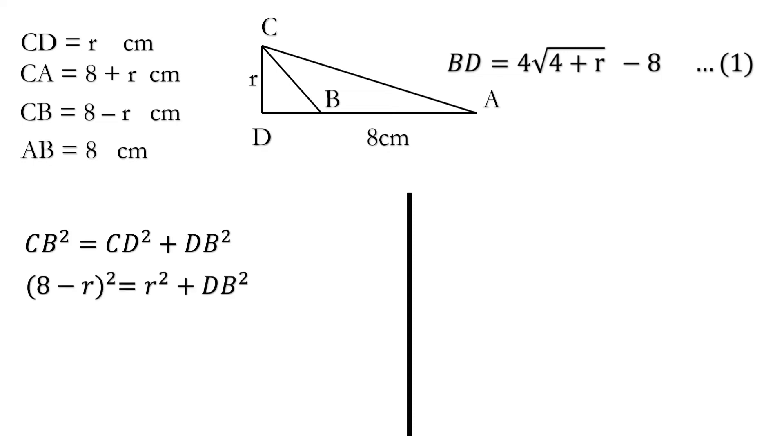Again putting the values we get 8 minus R whole square is equal to R square plus DB square. Solving it in the similar way we get DB is equal to under root 64 minus 16R and this is also equal to 4 root 4 plus R minus 8 from our equation first.